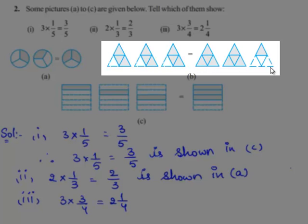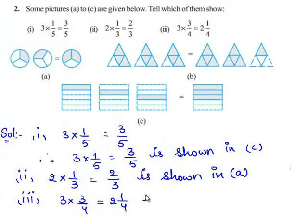On the right hand side, we have 3 triangles, out of which 2 triangles are shaded completely. And the third triangle is divided into 4 parts, out of which 1 part is shaded. Therefore, the third triangle represents a fraction 1 by 4. And the 3 triangles together represent 2 and 1 by 4, which is also equal to 3 times of 3 by 4. Therefore, the fraction 3 times 3 by 4, which is equal to 2 and 1 by 4, is shown in drawing B.